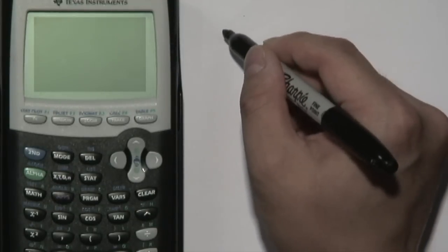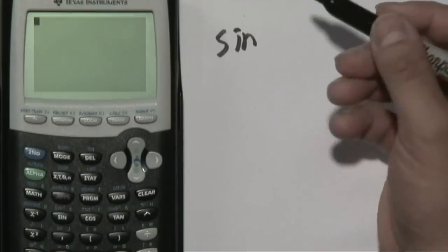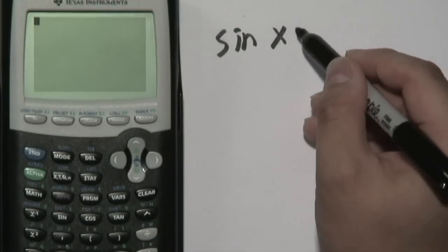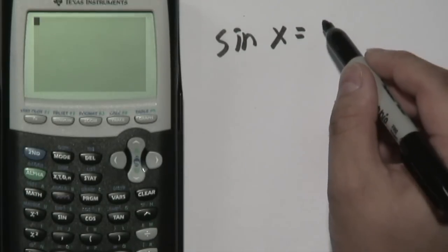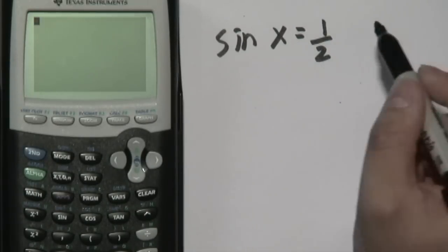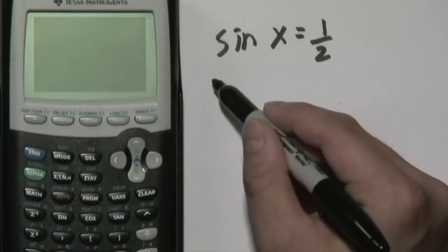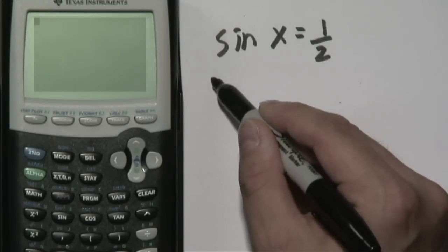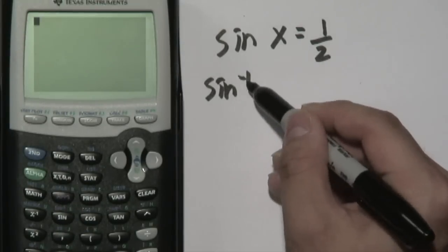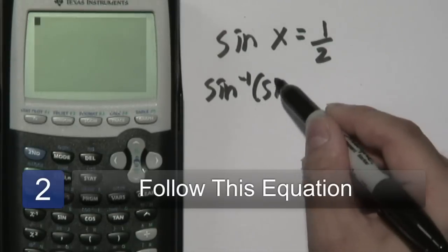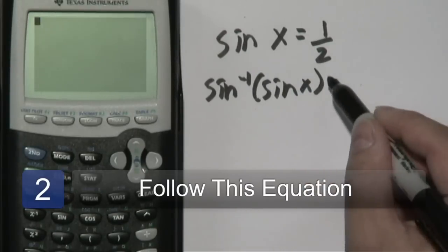So suppose for instance you wanted to find sine of what angle, let's call it x, equals to let's just say 1/2. Now one operation that you'll need to do to find out what x is, is to apply the same property on both sides. You're going to take the sine inverse of both sides.